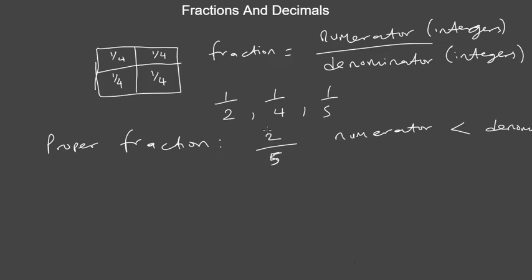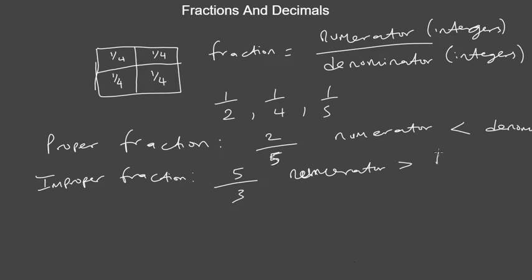An improper fraction is one in which the numerator is greater than the denominator. You can remember it this way: when something below carries something heavier or larger above, that's not proper. So that's what an improper fraction is.